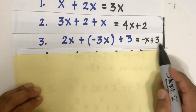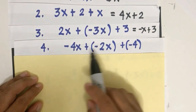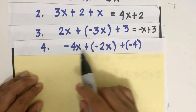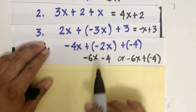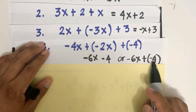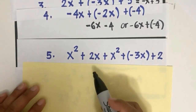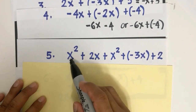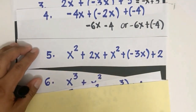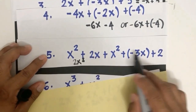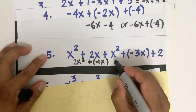For 2x plus negative 3x plus 3: 2x and negative 3x are like terms with the same variable x and exponent 1. All you have to do is perform integer arithmetic on the coefficients: 2 plus negative 3 equals negative 1. So the result is negative x. The 3 is a constant and is just copied.